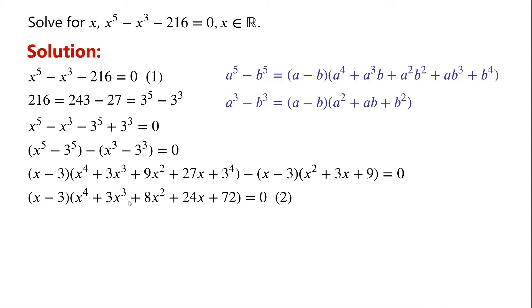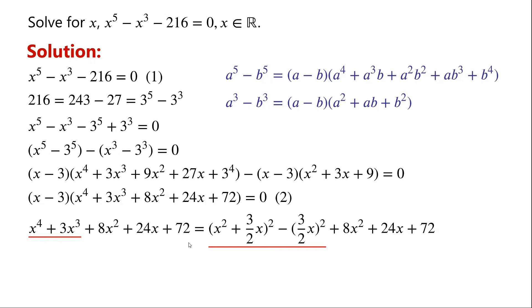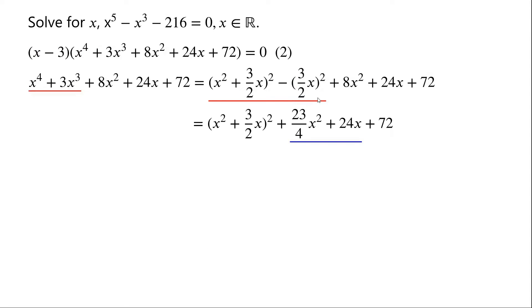Solving this quartic algebraic equation isn't easy, so we'll try to find out whether this quartic algebraic expression can equal zero. We have this quartic algebraic expression from which we can create a perfect square from the first two terms, and we can now write x squared plus 3 over 2 x, squared minus 9 over 4 x squared. Looking at the second and third terms: the second term is minus 9 over 4 x squared, and the third term can be written as 32 over 4 x squared.